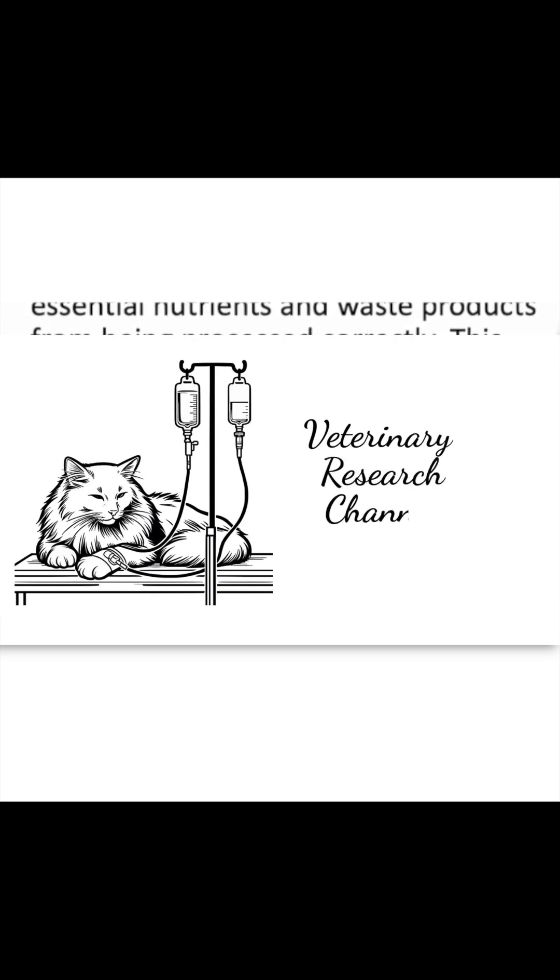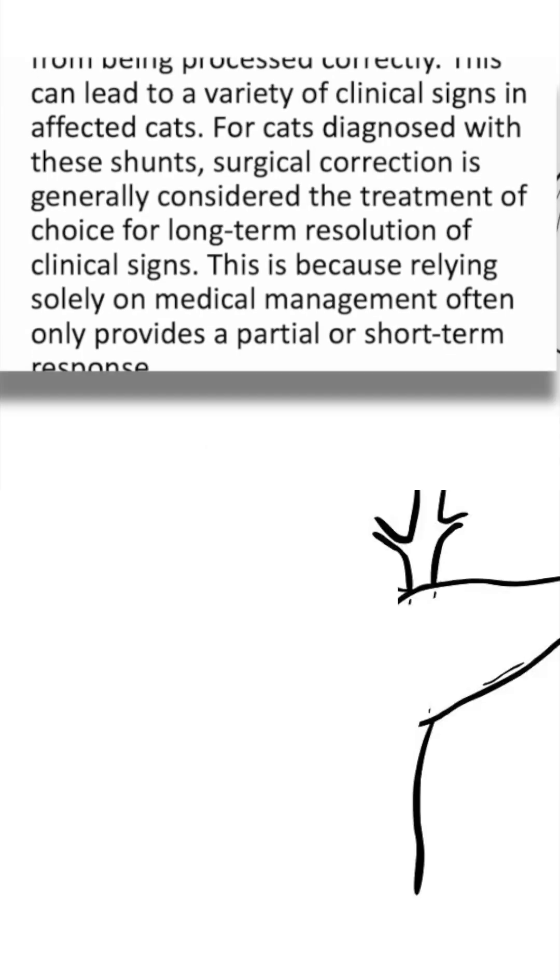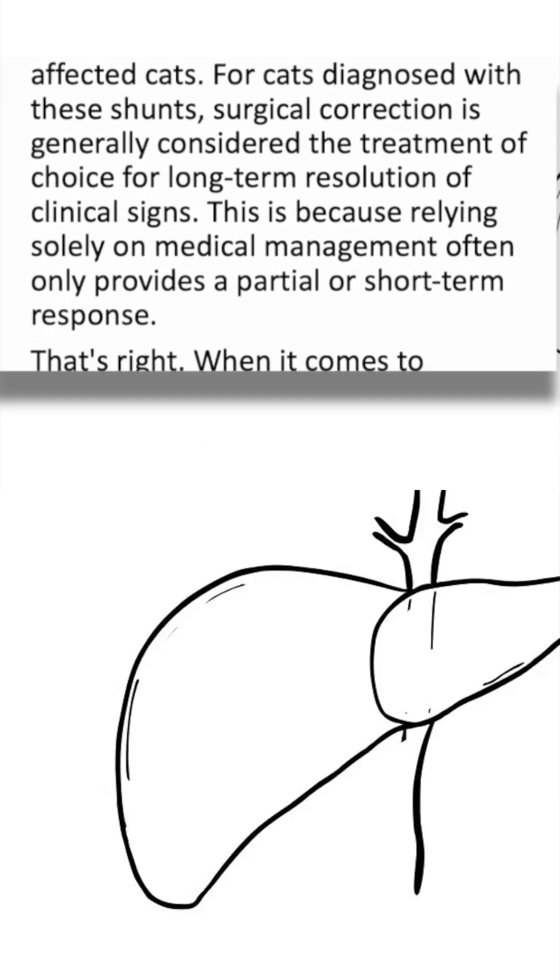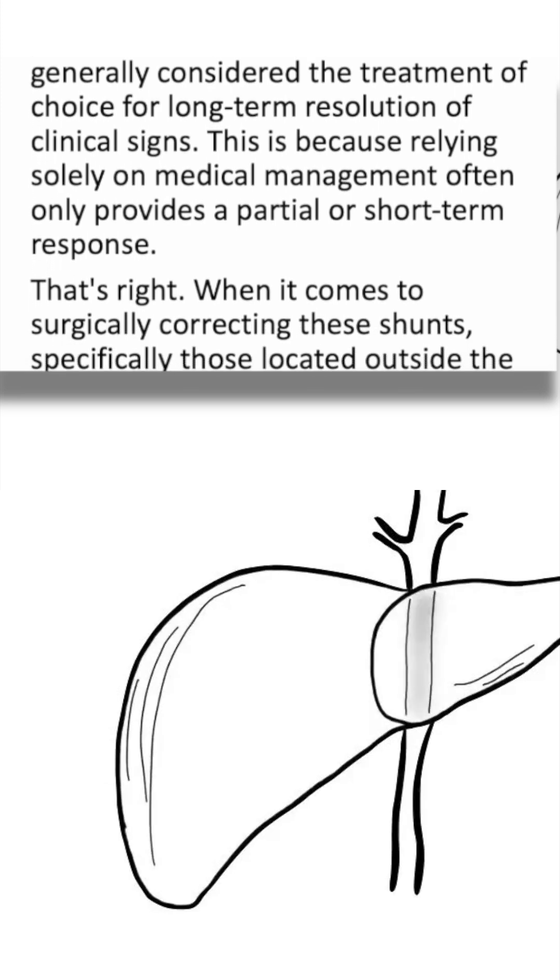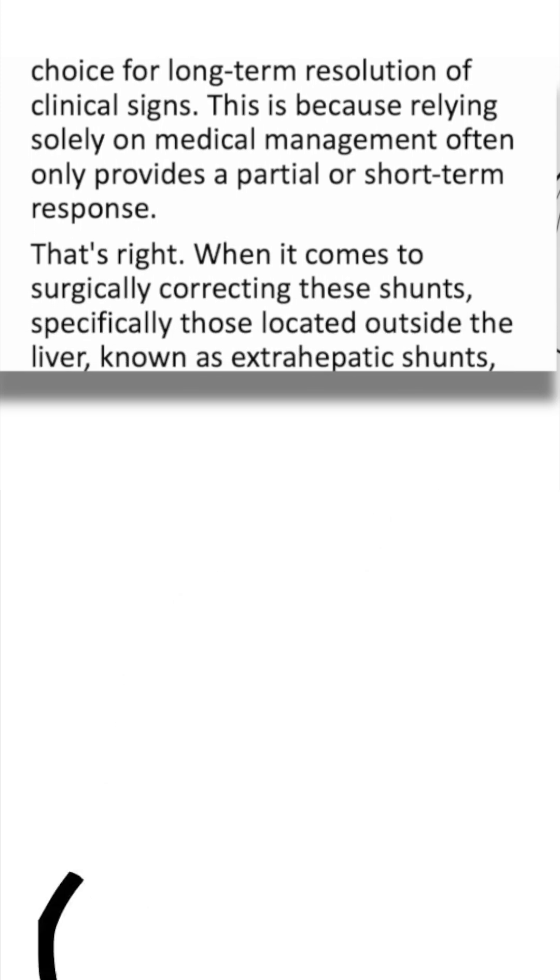For cats diagnosed with these shunts, surgical correction is generally considered the treatment of choice for long-term resolution of clinical signs. This is because relying solely on medical management often only provides a partial or short-term response.